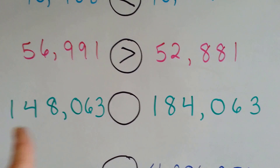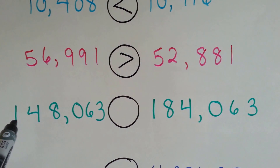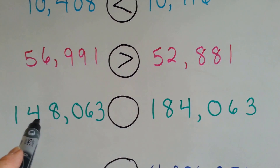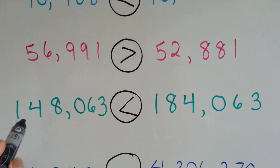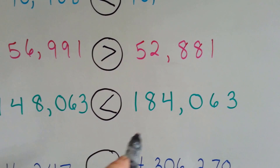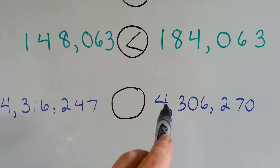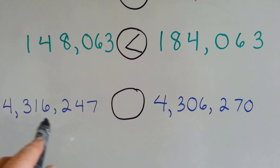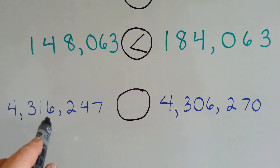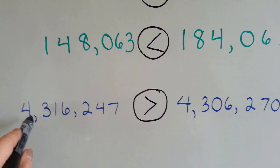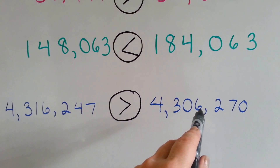How about this one — which one's the bigger number? They both have six digits. If you said this one, you're right. Both have a one in the hundred-thousands place, but in the ten-thousands place this one only has a four and this one has an eight, so that's the bigger number. 148,063 is less than 184,063. This is our last one — which one's bigger? They both have four million; they both have three hundred thousand. If you said this one, you're right: it's got a one in the ten-thousands place and this one has a zero. 4,316,247 is greater than 4,306,270.